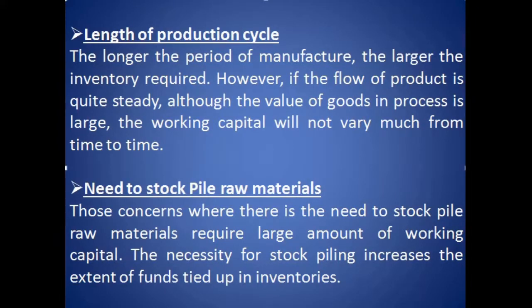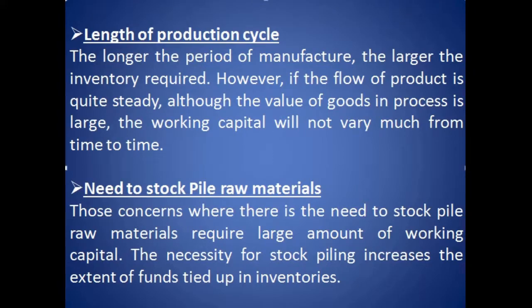The next factor is length of production cycle. Production cycle means the total time period taken by the production process to complete — that is, the conversion of raw material into finished product. If the production cycle is too long, the company will require a huge amount of working capital. If the production cycle is shorter, the company will require less working capital. The next point is the need to stockpile raw materials — sometimes raw material is scarce or suppliers put a condition to buy in large quantities.